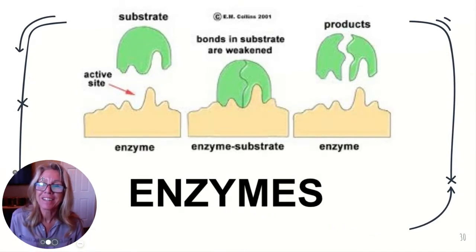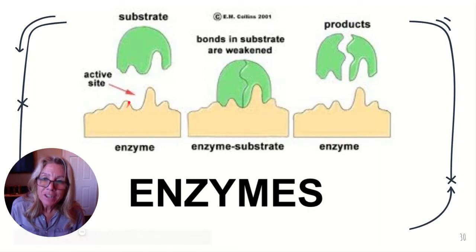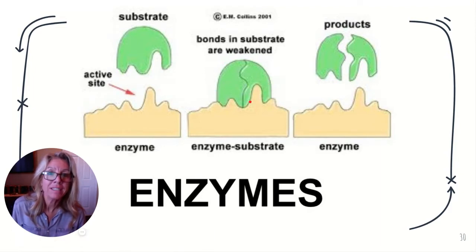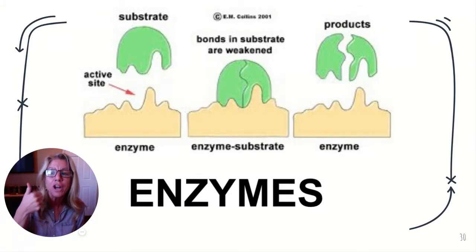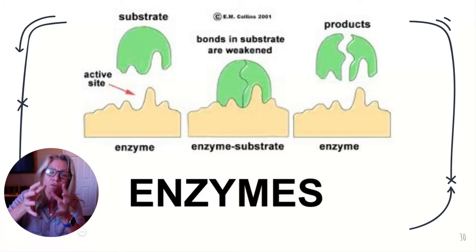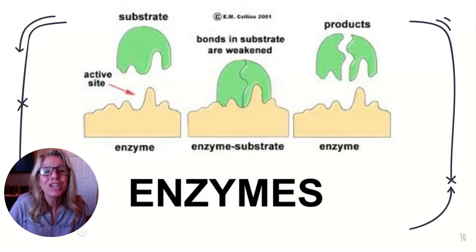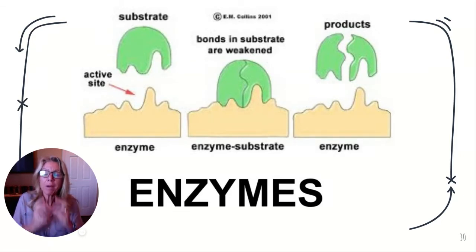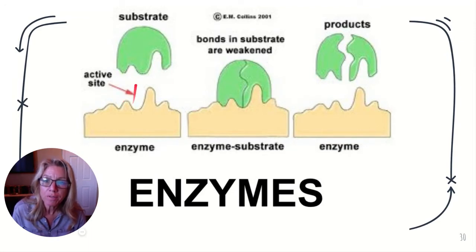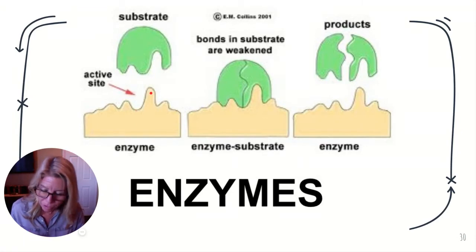Here's your enzyme, here's the active site, and that's where the substrate binds. Remember proteins are really specific in their shape — there's primary, secondary, tertiary, and quaternary structure. Primary is a sequence of amino acids, secondary is an alpha helix or beta pleated sheet, tertiary is the folding pattern imposed by the R groups, and quaternary means there's more than one chain. Enzymes are very specific in their shape, which is conducive to binding to their substrate.